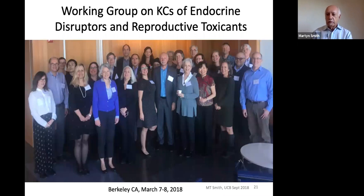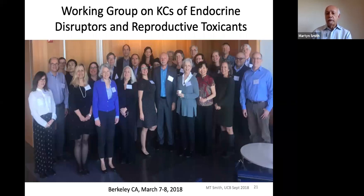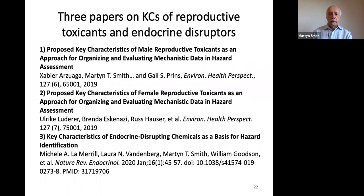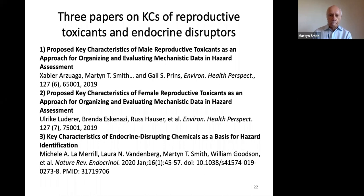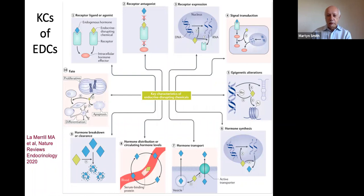Tom Zoeller, Michelle, and Meryl led the endocrine disruptors group workshop on KCs. Gail Prince helped lead the male reproductive toxicity work with Xavier, and Azawaga from EPA. The female reproductive toxicants work was led by Ulrike Luderer. This group produced three papers covering the key characteristics of male and female reproductive toxicants and the key characteristics of endocrine disrupting chemicals, to which Laura Vandenberg, Tom, and Michelle contributed greatly.